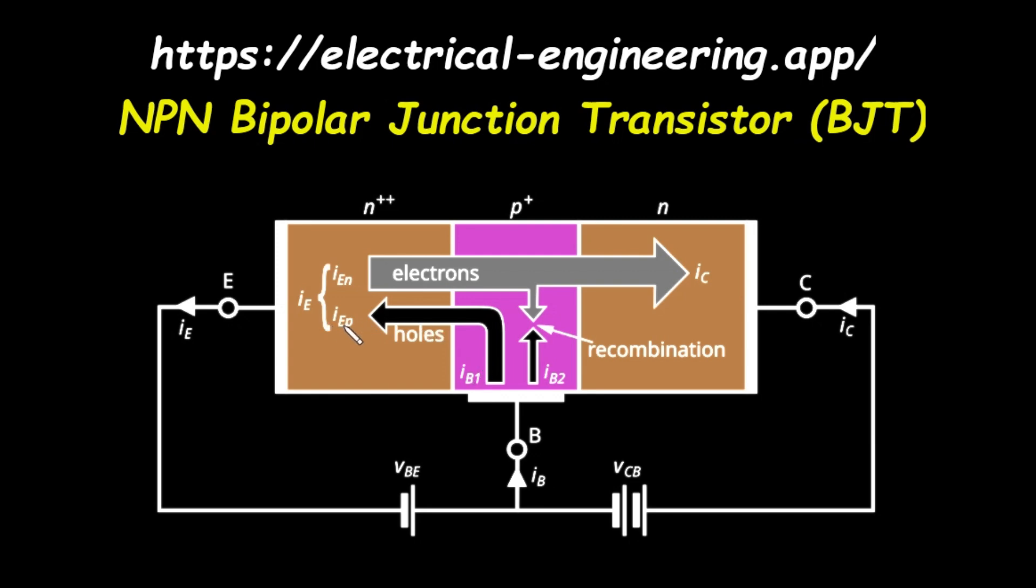Now let's look at I_B2. This current is caused by the recombination that happens inside the base. Remember when some of the electrons from the emitter recombined with holes in the base? When a hole is lost to recombination, it must also be replaced from the external circuit to maintain the electrical balance of the base region. The current that supplies these replacement holes for recombination is I_B2. Therefore, the total base current, I_B, which flows into the base terminal, is the sum of these two small currents, I_B1 plus I_B2. It's the current needed to supply holes for injection into the emitter and to replace holes lost to recombination.